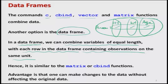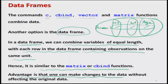This operation is very much similar to the matrix or cbind function. Then what is the difference between the two? Why should I use the structure of a data frame rather than matrix or cbind? One key advantage is that one can make changes to the data without affecting the original data — I can do different types of manipulation over the data frame and the original data set will not be altered.